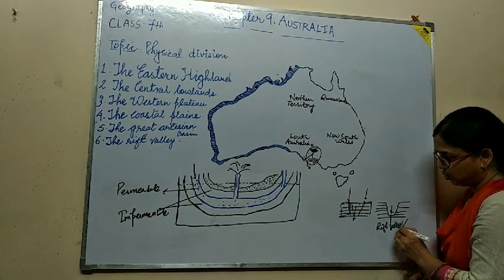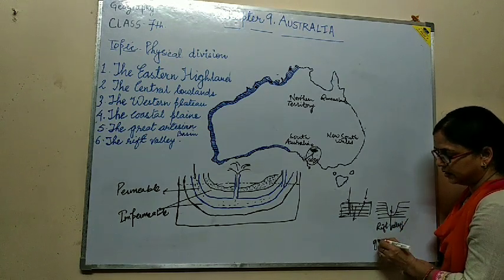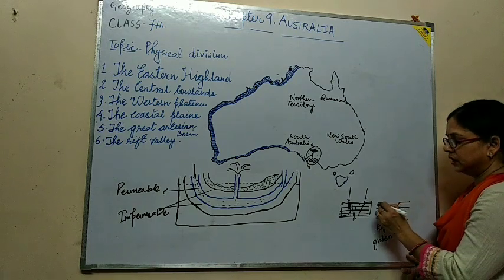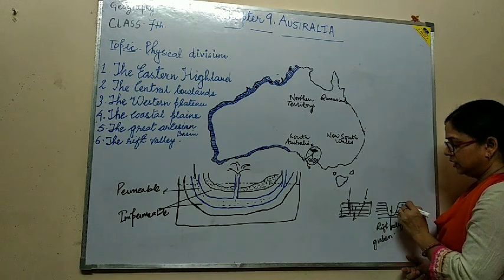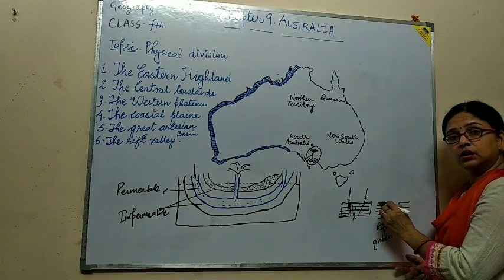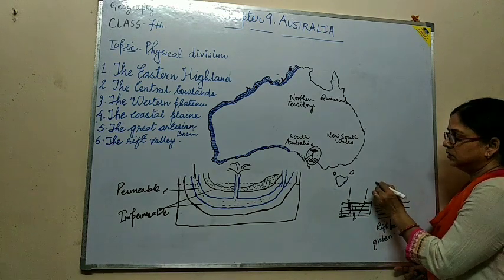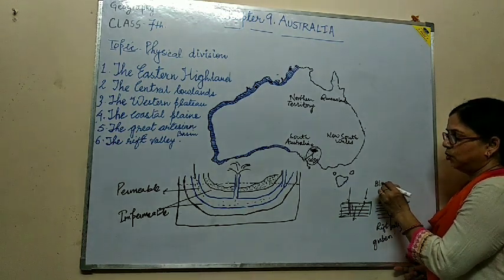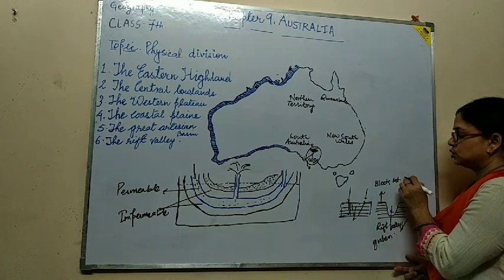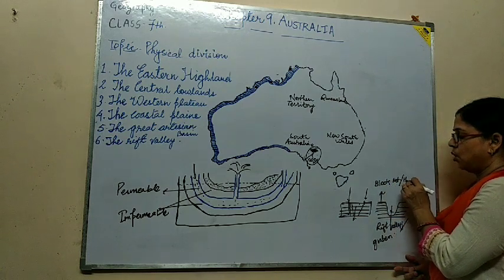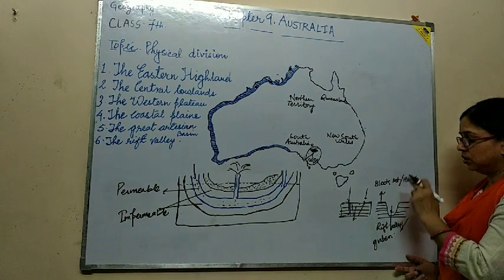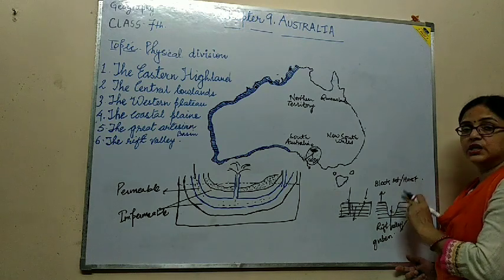It is also called a graben. The remaining part of the earth makes the block mountain, which is also called a horst. So this is how the rift valley is formed, and it takes place in the same manner here in Australia.